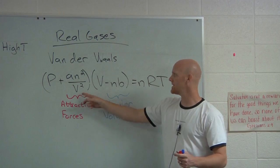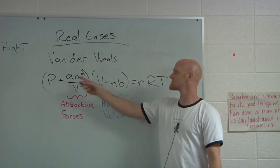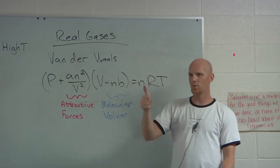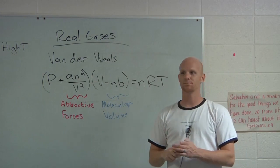And there's our two corrections. We don't make any assumptions anymore. They have attractive forces, the molecules, and the molecules do take up volume. No assumptions made. Trying to approximate reality a little bit better than PV equals nRT. Know what each of these terms corrects for, and then know that the smaller the constant values, the more like an ideal gas that particular gas behaves.